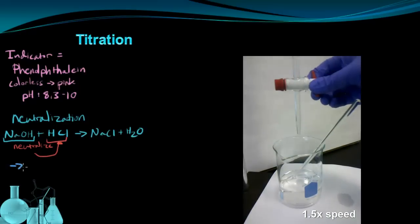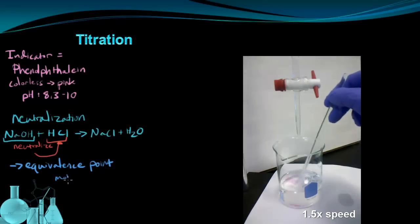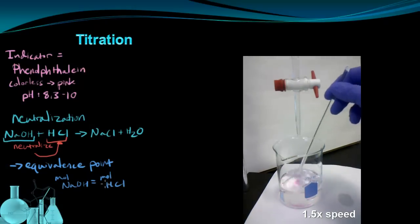So I'm trying to get to the equivalence point. The reason for that is that at this equivalence point, I know that the moles of NaOH equal the moles of HCl. These two have to be exactly equal at the equivalence point because they get used up in the neutralization reaction. And if I know that the moles equal each other, I can figure out the concentration of this unknown HCl.